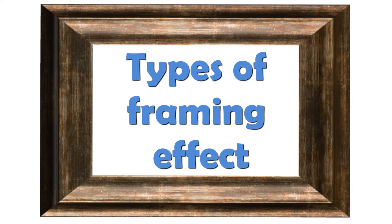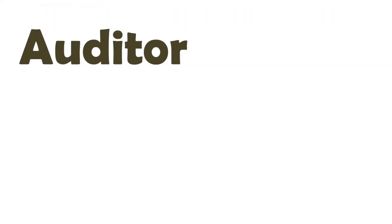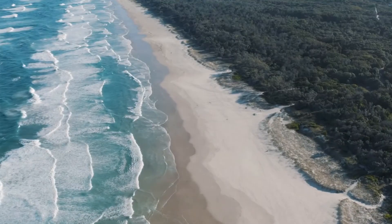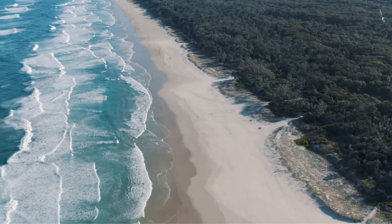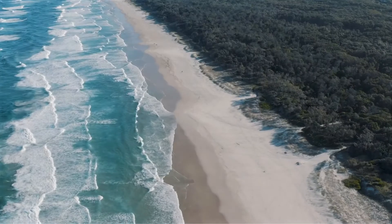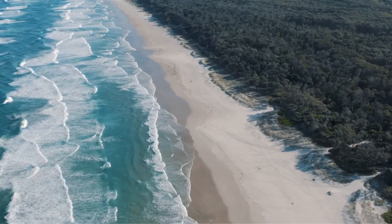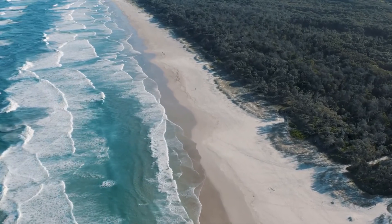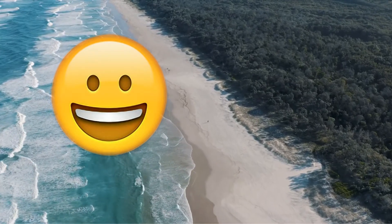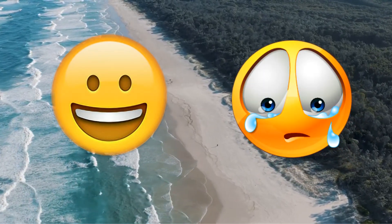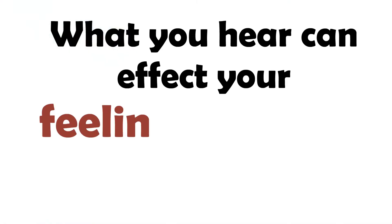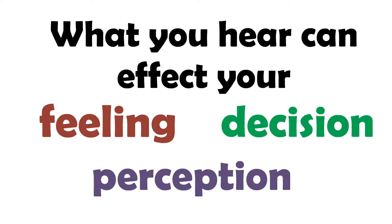The first one is the auditory frame. Imagine you are looking at someone's video. Which one gives you the idea that the person is happy, and which one gives you the idea that the person is sad? Sounds, background music, and the intonation of a salesman can influence how you feel about something — and will also influence your decision to buy.